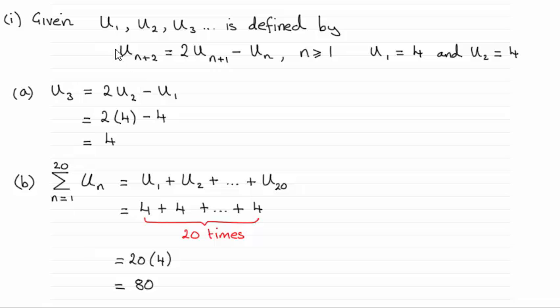We were given this sequence of terms U1, U2, U3 and so on, and it was defined by this recurrence relationship here. The N plus 2 term in the sequence, U_{N+2}, was equal to twice the N plus 1 term, U_{N+1}, minus the nth term, U_N, where N was greater than or equal to 1. So we're given this initial set of values here: U1 is 4 and U2 is 4.